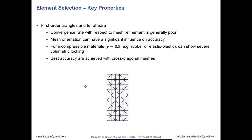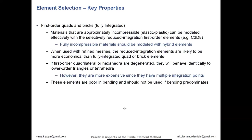For element selection key properties: first-order tetrahedrons — triangular elements are constant strain elements, so you could have more spurious oscillations in the stress field, but they can be good if you have good mesh refinement. For incompressible materials, you can have a lot of volumetric locking, which means elements are behaving stiffer than they should in real life. For triangular elements, using cross-diagonal meshes gives you more flexibility. First-order quads and bricks are generally pretty nice, but they're not very good for bending — mesh refinement can help, as can reduced integration. You may need to add hourglass control within Abaqus.